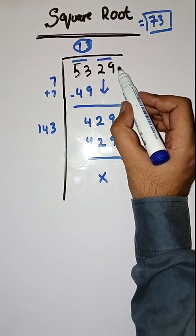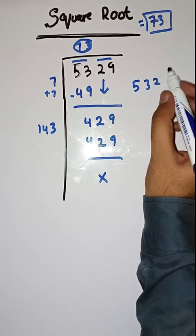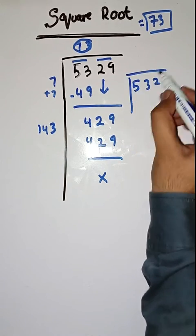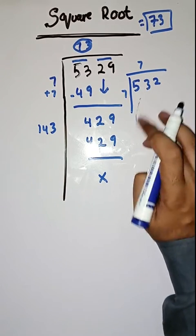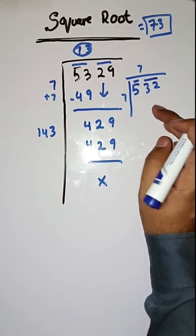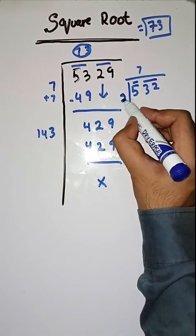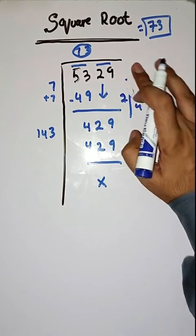We have to make pairs from right to left. Pairs are necessary.